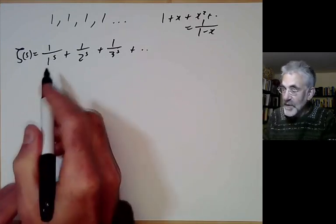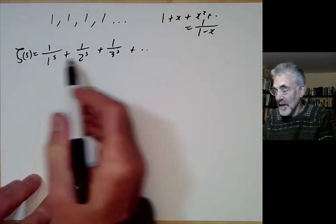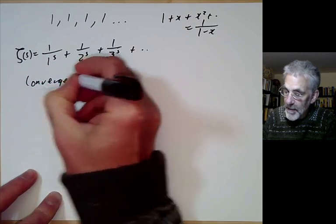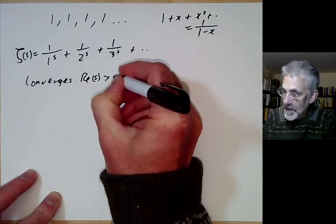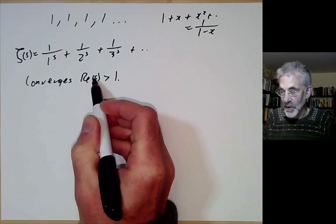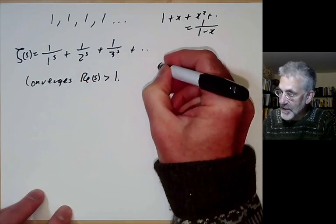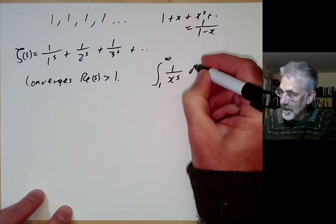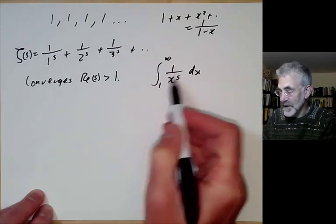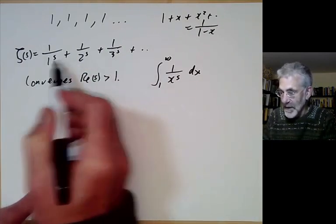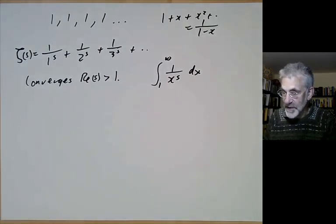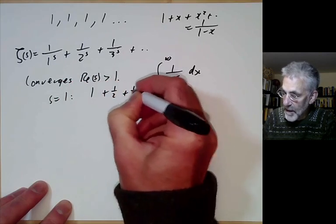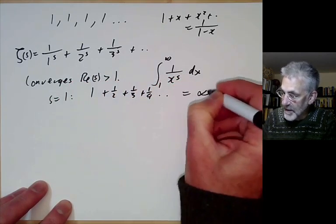Let's review some properties of the Riemann zeta function. First, it converges provided the real part of s is greater than 1 — that follows easily by comparison with the integral of 1/x^s from 1 to infinity, since the function is decreasing and the integral converges exactly when the series converges. At s = 1 it definitely diverges, because we get the harmonic series, which is well known to be infinite.